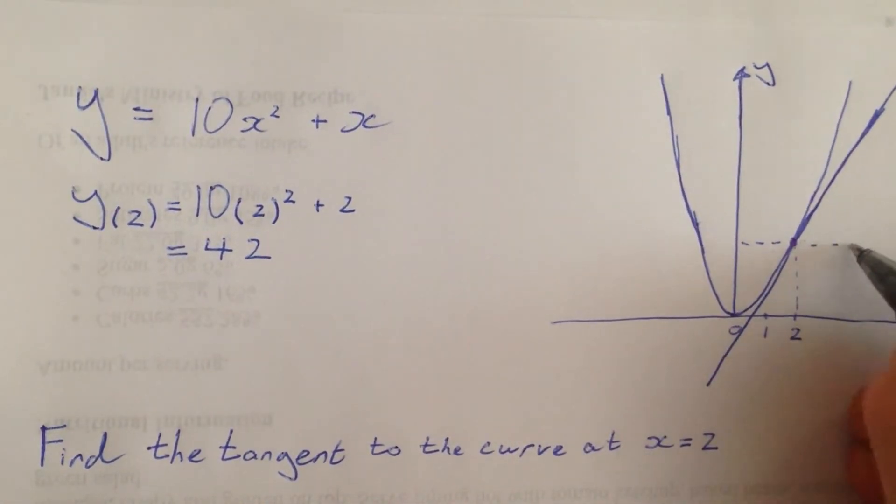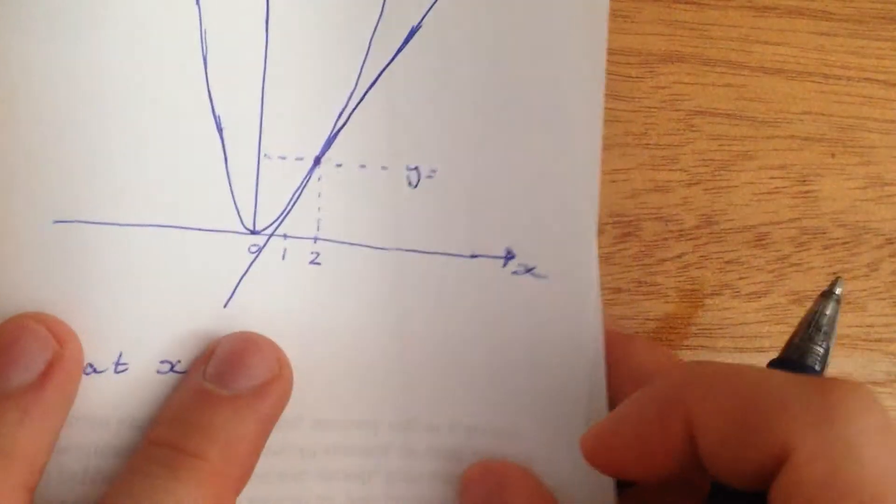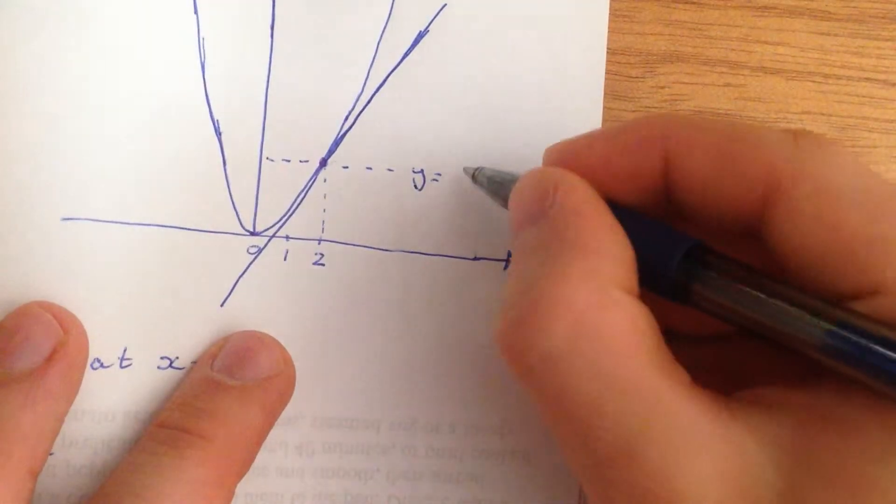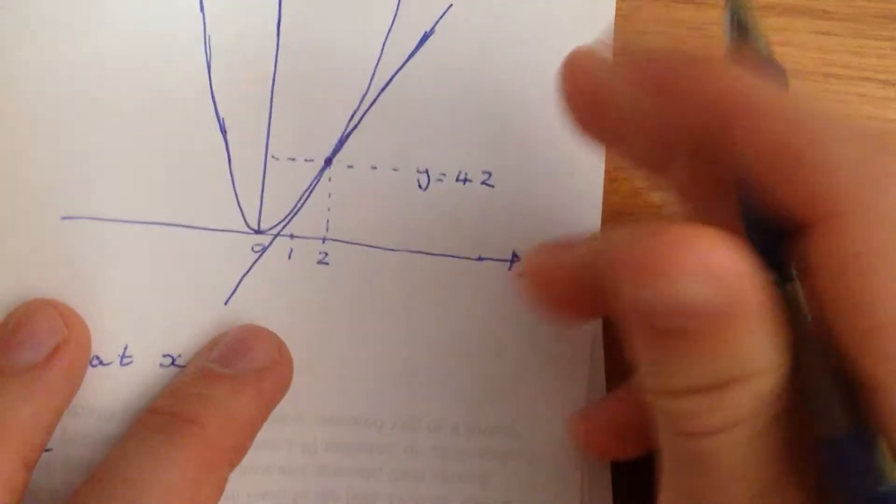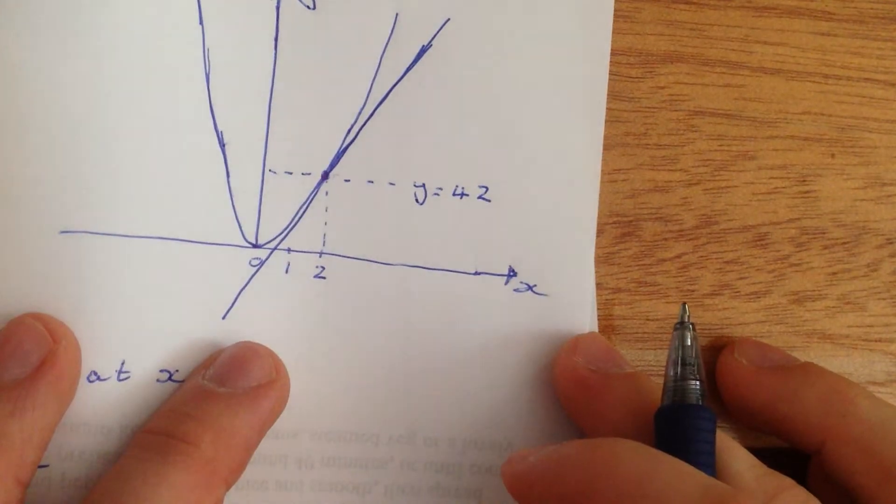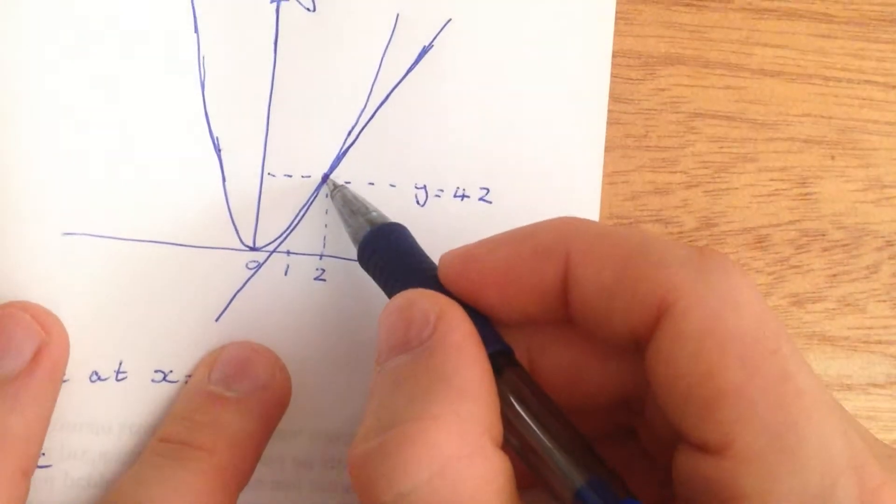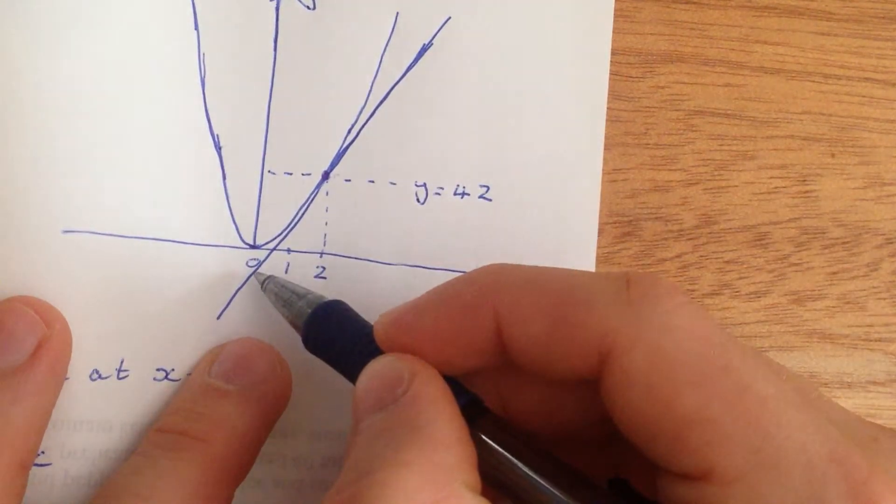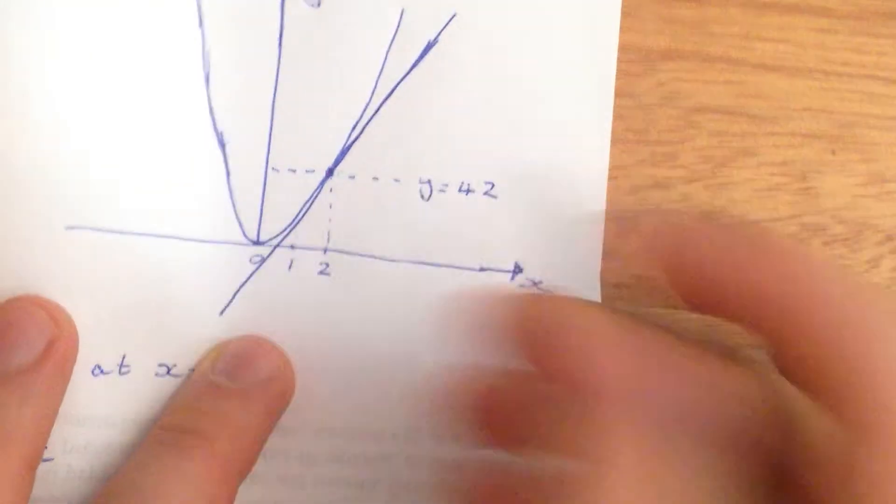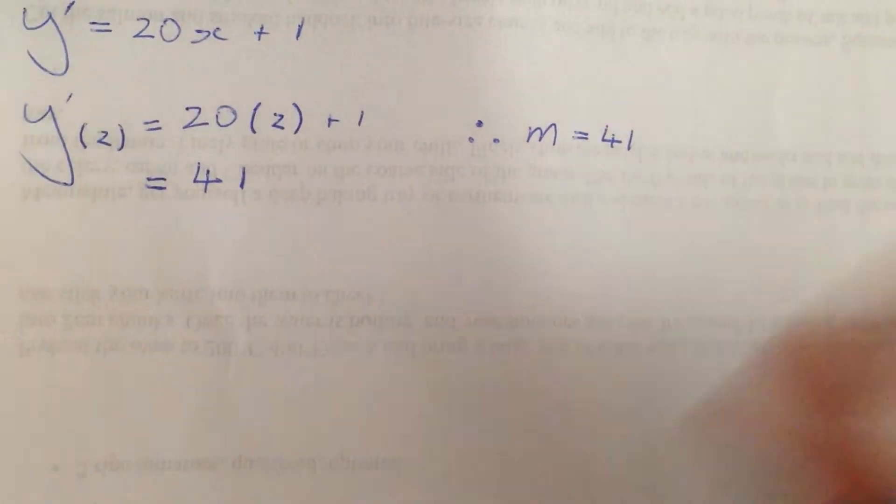That height is y equals 42. That's the visual meaning of what that means. So we know that this curve passes through y equals 42. So that's what we can use to find c.